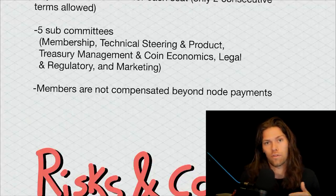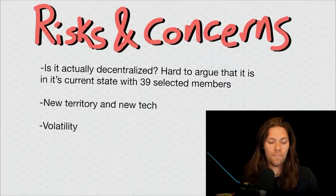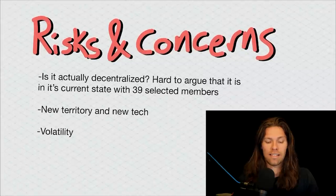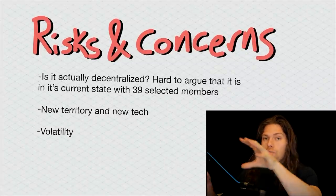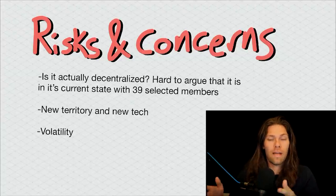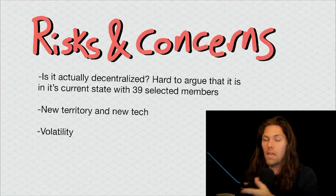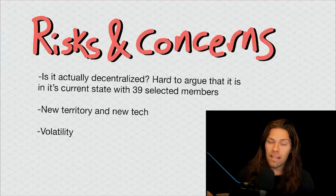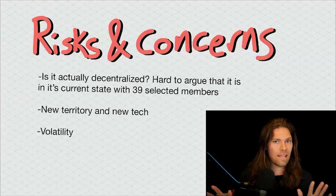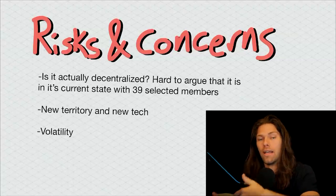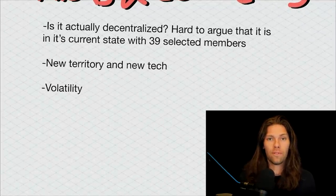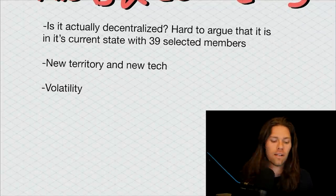But there are risks and concerns. The biggest one: is it actually decentralized? To be honest, it's really hard to argue that it is decentralized in this current state with the 39 selected members. We have these node operators who are pre-selected, and inherently that's not decentralization as is. Now they do have plans to make this more and more decentralized over time, but at its current state, it's hard to say that it truly is. Some people say it is because 39 is enough and there's some randomization. It would still be hard for there to be a bad actor, but it's hard to say it's truly decentralized because not just anyone could go in, start a node, and start processing and validating transactions. It's also a completely new territory and new tech. They're the only people doing the Hashgraph technology, and of course there's an uphill battle here. And then as always, volatility. Every single crypto is extremely volatile.